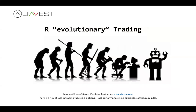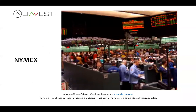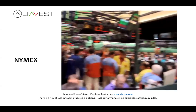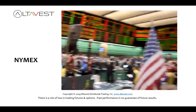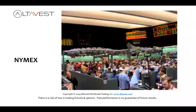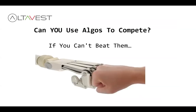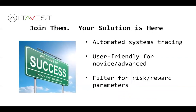Here's how it used to look — grainy video I took years ago in New York at the NYMEX, trading metals and softs. It worked well, but now this is what it looks like: no emotion, automation, built-in risk controls. So how would you use algos to compete in the current environment? If you can't beat them, join them. We have a solution for you: automated systems trading.